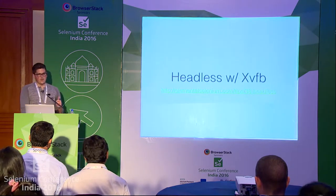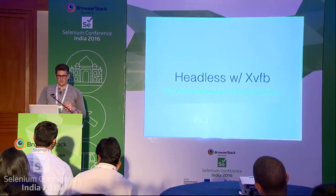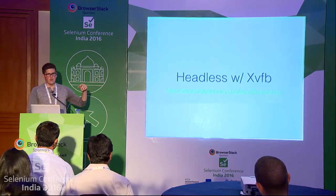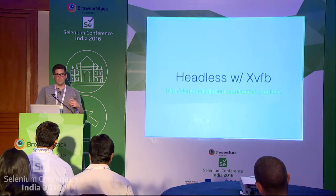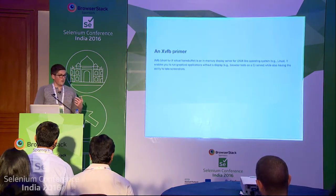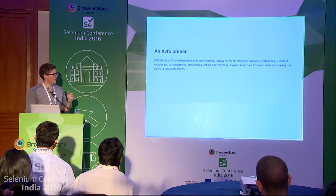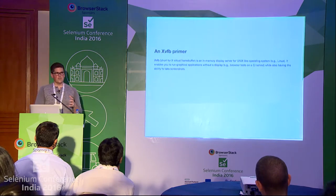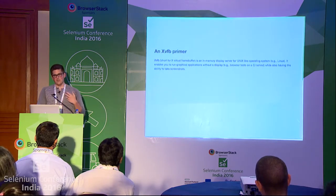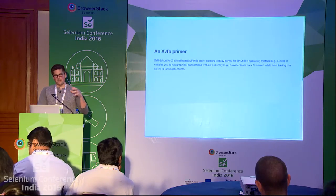The first one is using a virtual frame buffer called XVFB — it's the common one people use. Each tip has a link to where it is on the web. Unfortunately, the only ones available on the web right now are just Ruby, but all the code from all these tips has been open sourced, so it's easy to get access to. XVFB is short for X Virtual Frame Buffer. It's an in-memory display that really only works on Unix-like operating systems — Linux and Unix derivatives — and it enables you to run graphical applications without a display, while also preserving the ability to take screenshots.